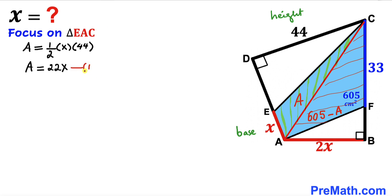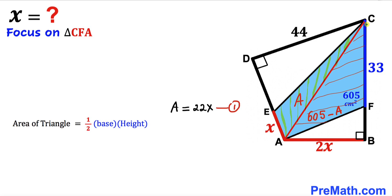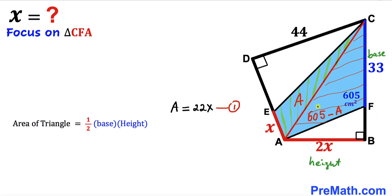Now let's focus on triangle CFA and recall the area formula: area equals one half times base times height. For triangle CFA, CF (which is 33) is the base, and AB (which is 2x) is the height. The area of this triangle is 605 minus A, so: 605 minus A equals one half times 33 times 2x.